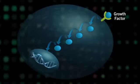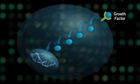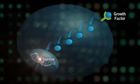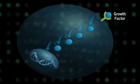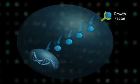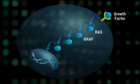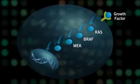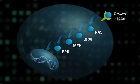Here, genes that make the cell grow or survive are turned on. In the Ras-Raf pathway, the Ras, BRAF, MEK, and ERK proteins carry out this chain of events.